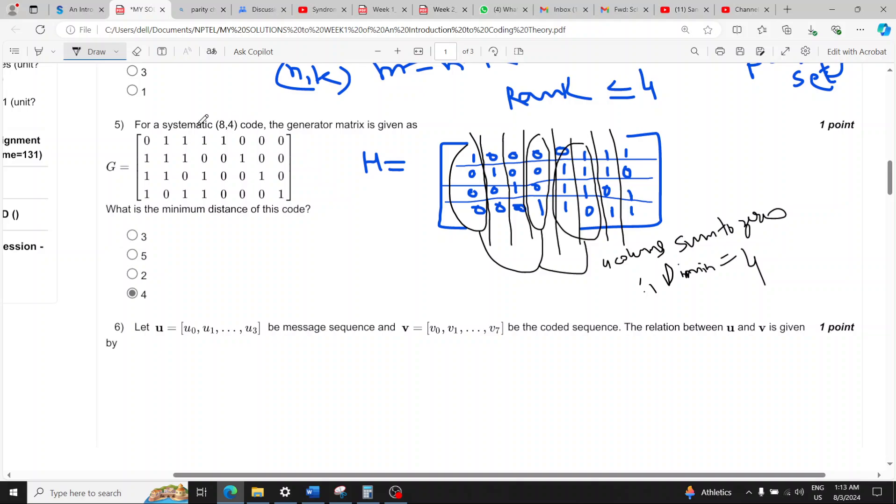For question five, option four is the right answer because they are asking what is the minimum distance. To find the minimum distance you can generate all possible code words and find the minimum weight but that will be tedious.